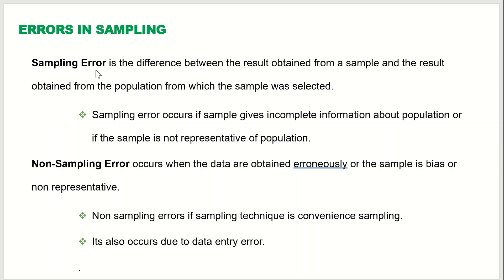The first type is sampling error. Sampling error is the difference between the result obtained from the sample and the result obtained from the population from which the sample was selected. For example, the mean calculated from the sample will be different from the mean of the population — that difference is the sampling error. Sampling error occurs if the sample gives incomplete information about the population or if the sample is not representative of the population.